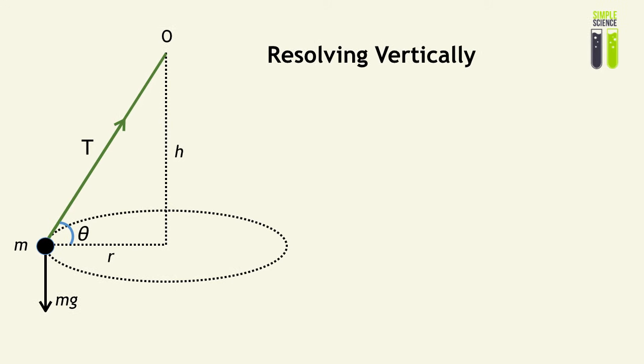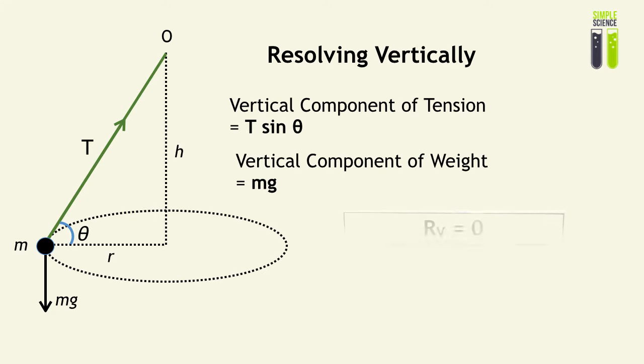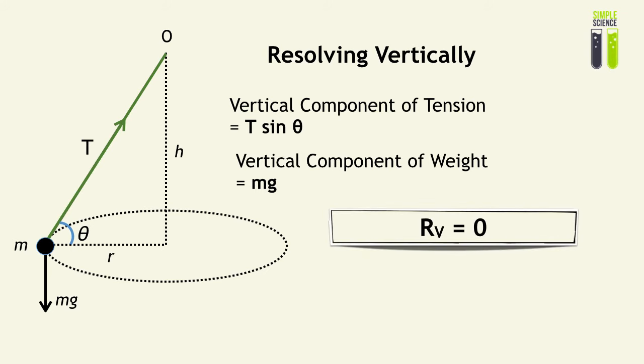Let's look at resolving the forces vertically. We have to resolve the vertical components of each of the forces acting on the object, and these forces include the tension and the weight. The vertical component of the tension is equal to T sin θ, and the vertical component of the weight is equal to mg. Since in horizontal circular motion there is no vertical displacement, the net resultant force in the vertical direction is zero.